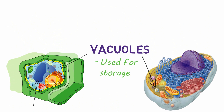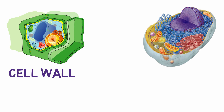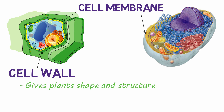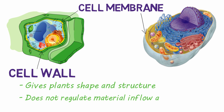Lastly, we have the cell wall. While both plant and animal cells have cell membranes, only plant cells have a cell wall. This cell wall gives plant cells their shape and structure. However, the cell wall does not regulate inflow and outflow of molecules — that's still the job of the cell membrane.